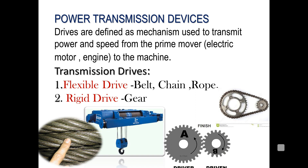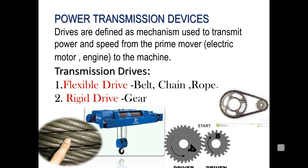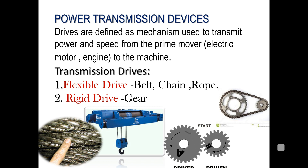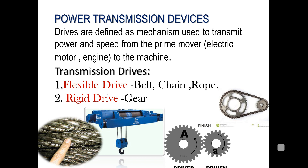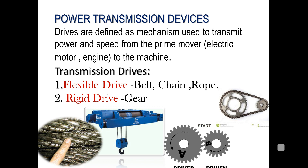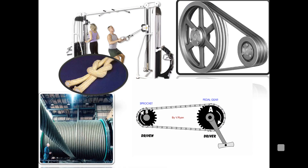In power transmission devices, there are two basic classifications: one is a flexible drive and another is a rigid drive. As the names suggest, gears are an example of rigid drives because during power transmission the elements which transmit power are not flexible — they are rigid. Power transmission takes place by successive engagement of the teeth on the input and output shafts. Flexible drives, on the other hand, use elements such as belts, chains, and ropes.